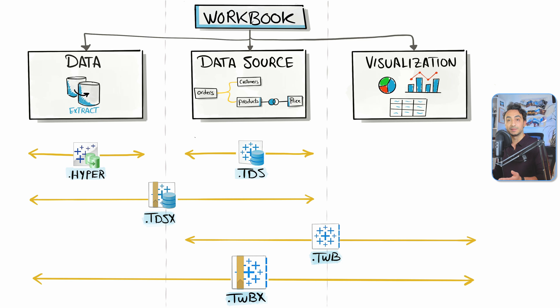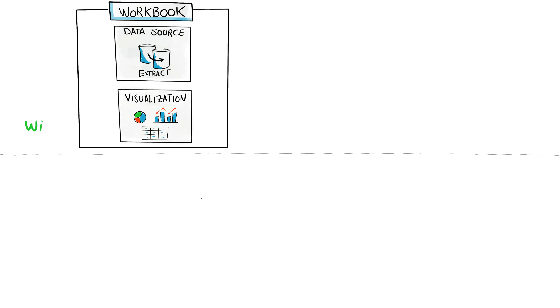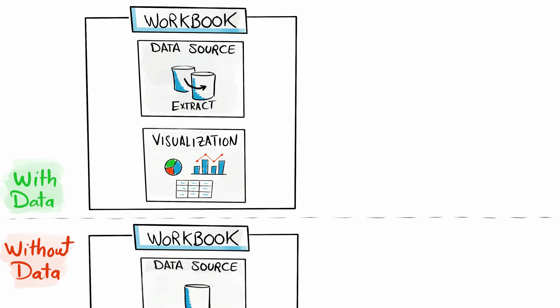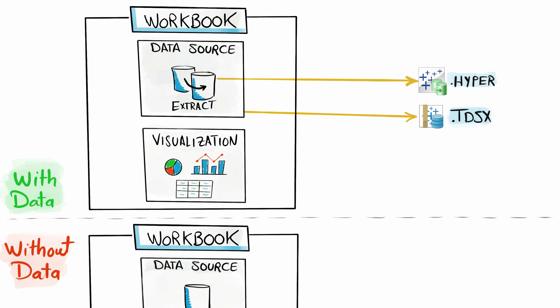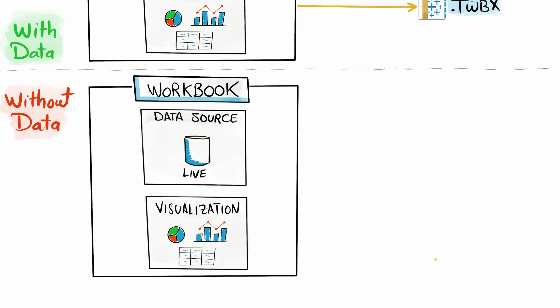Tableau designed different types of files for different purposes, so depending on your situation you can share your work accordingly. Generally, we have two types of workbooks: a workbook with data using an extract connection, and one without data using a live connection. With the extract-based workbook, you can share three file types — Hyper for data only, TDSX for data and data source, or TWBX for the full package.